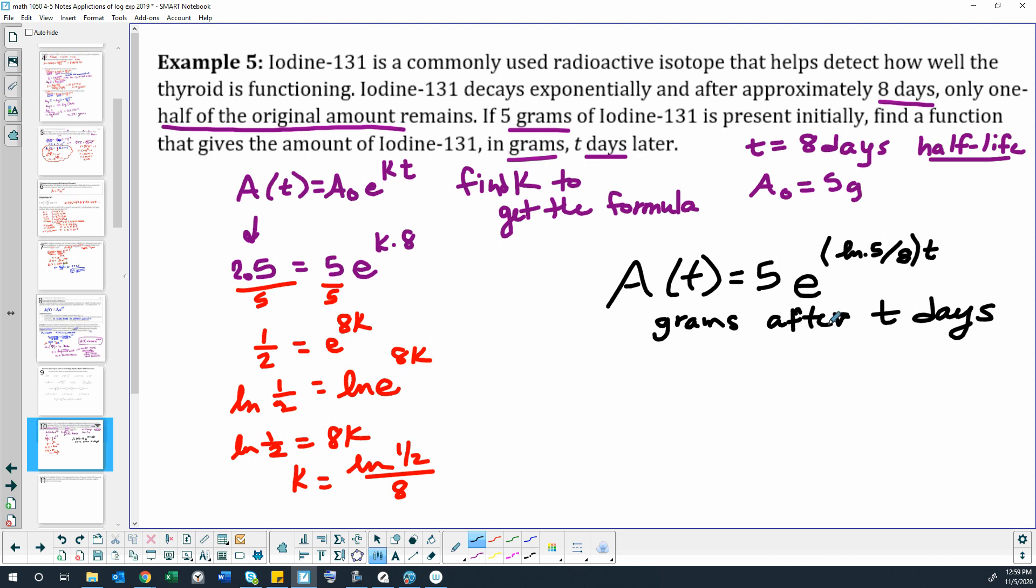We could have found a decimal for this and put that in there so that it's maybe a little prettier, a little bit less busy. But I like the idea of keeping my k value exact. Now just out of curiosity, what is this approximate value? Because this is decay, this should be a negative k value. Let's see if that works out. Natural log of 0.5 divided by eight, and we got a negative k value, so negative 0.0866.